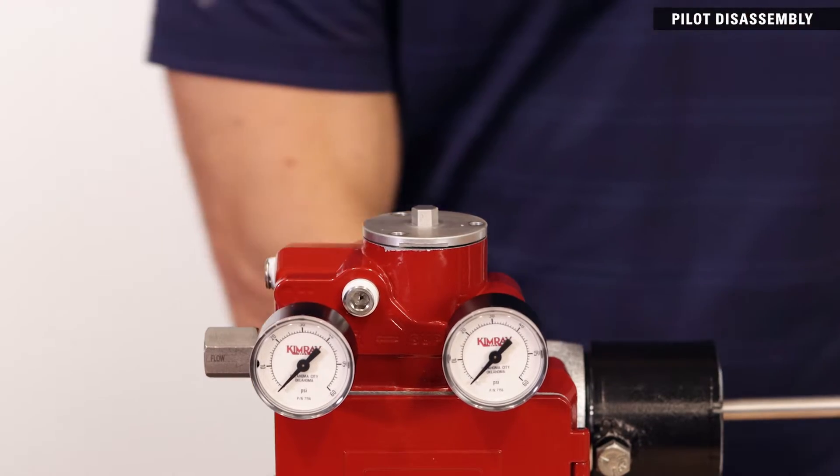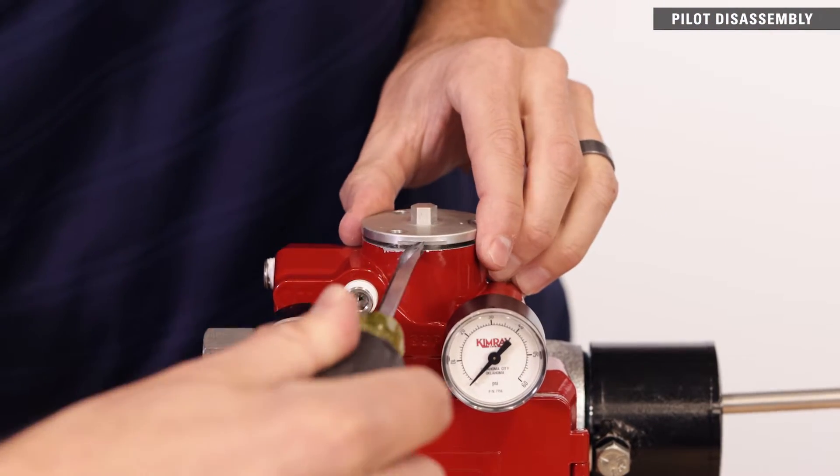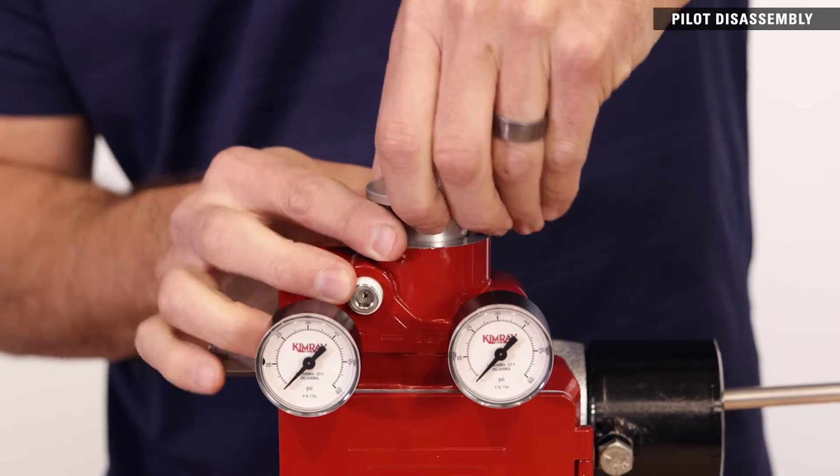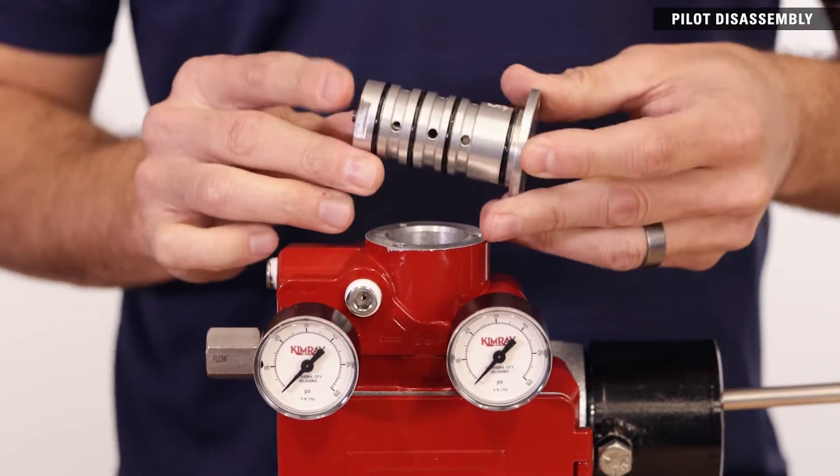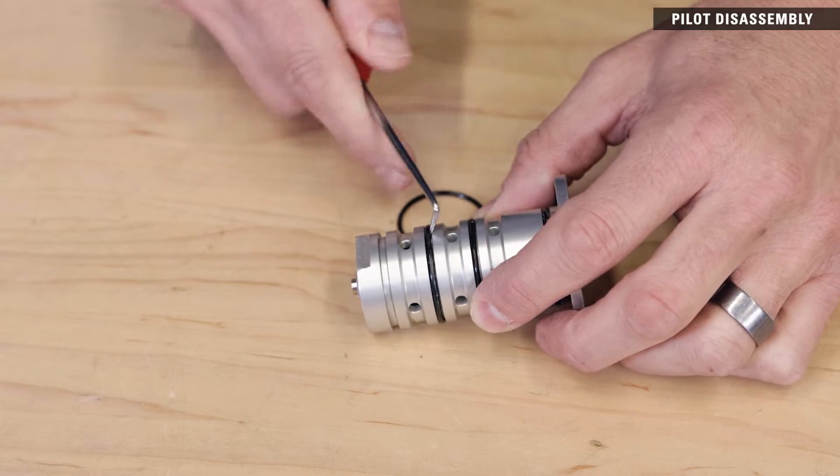Remove the socket screws with the included 1-8 inch hex key. Then remove the pilot by prying under the flats. Remove and discard the four O-rings around the outside of the pilot cartridge.